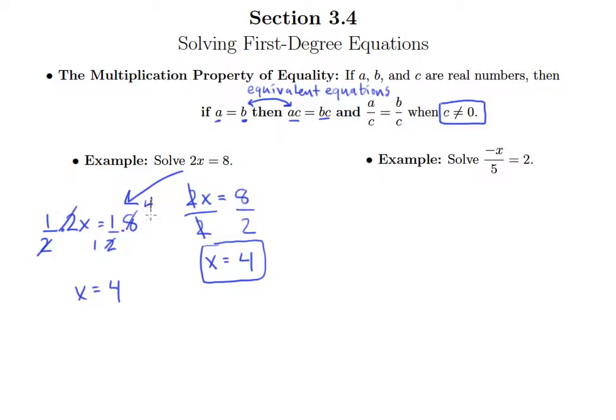But you've seen problems like this before, so this is really nothing new. What you may not have seen before is one that looks a little more like this. So here we're trying to solve negative x over 5 equals 2. We're dividing by 5.